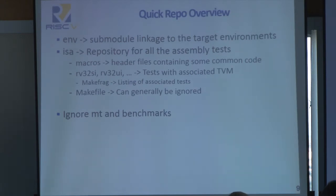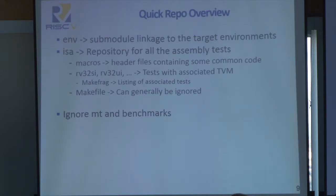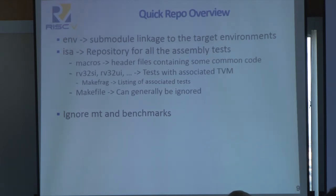Now that I have described what the test virtual machines and the target environments are, I will do a quick overview of the RISC-V test repository. If you open up the RISC-V test repository, you should see a sub-module link to the RISC-V test ENV, called ENV, that links the RISC-V test environments. And then a folder called ISA, and if you go into the ISA folder, there will be another sub-folder called macros, which contains some header files describing various assembler and pre-processor defines for quickly describing assembly tests.